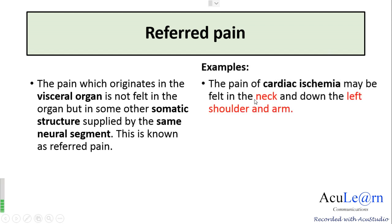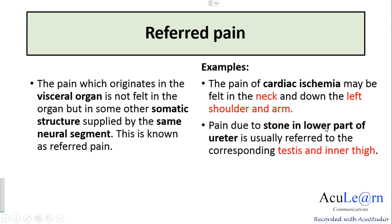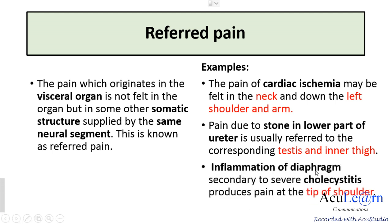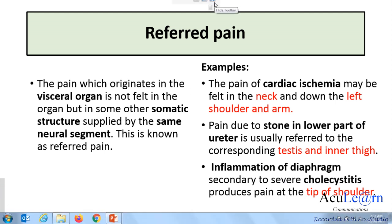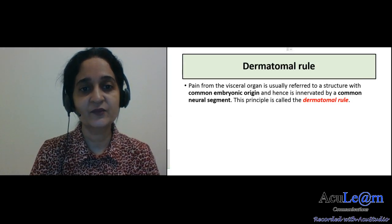Examples of referred pain include the pain of cardiac ischemia, felt in the neck and down the left shoulder and arm — the visceral organ is the heart but the pain is felt in the somatic structure. Pain due to a stone in the lower part of the ureter is usually referred to the corresponding testis and inner thigh. Another example is inflammation of the diaphragm secondary to severe cholecystitis, which produces pain at the tip of the shoulder.